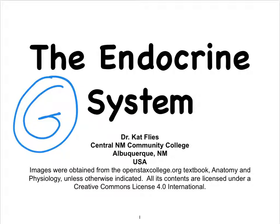The pituitary gland has two parts to it: an anterior and a posterior part. We're going to start with the posterior part, which is mostly nervous tissue. Another way of referring to the posterior part of the pituitary is to call it the neurohypophysis, literally meaning a growth underneath the hypothalamus made up of nervous tissue.